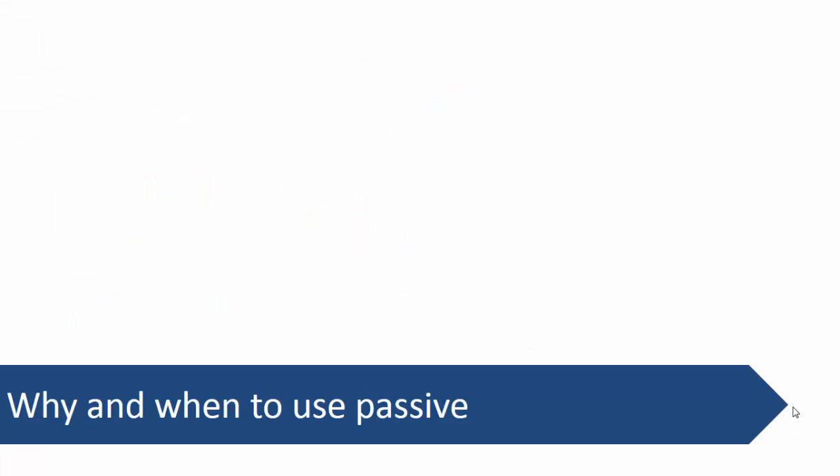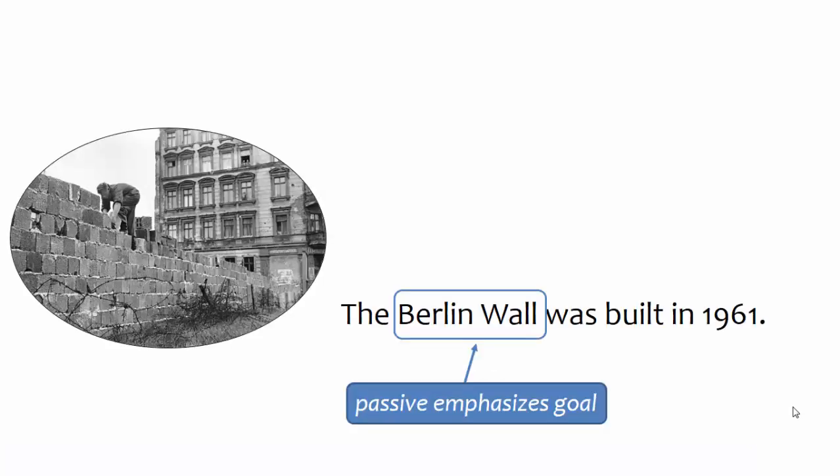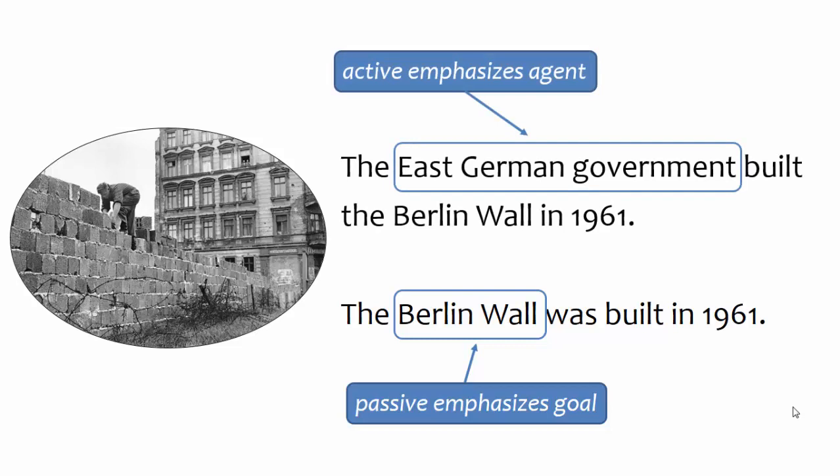Now let's explore why and when to use the passive. But first, let's debunk a common myth. You may have heard that you should avoid passive, but that's not quite right — sometimes passive is exactly what you need. Take again the example of the Berlin Wall. If we want to emphasize the wall's construction, we should use passive; here, the emphasis is on the wall itself. Notice that the agent is entirely absent from this sentence. If, on the other hand, we want to emphasize who built the wall, active is called for — the emphasis is on who was responsible for building the wall.